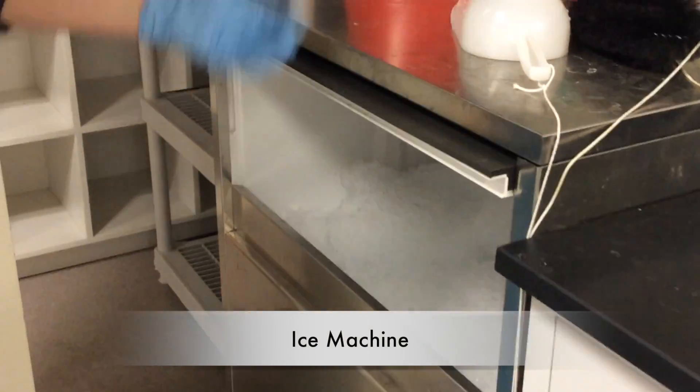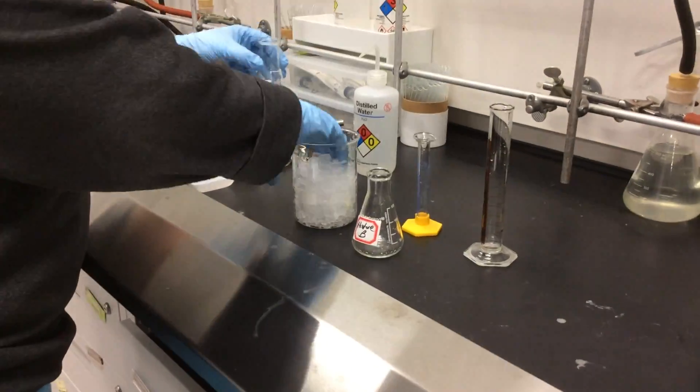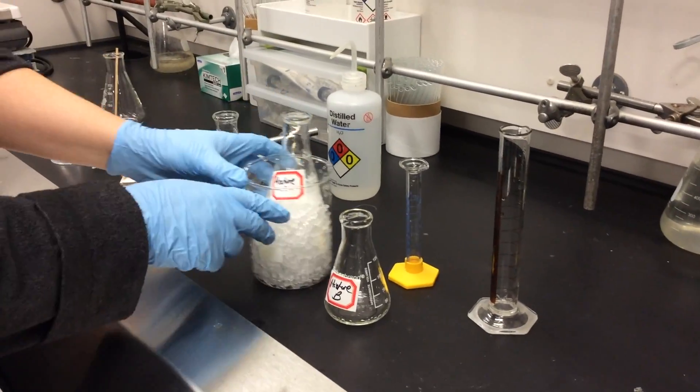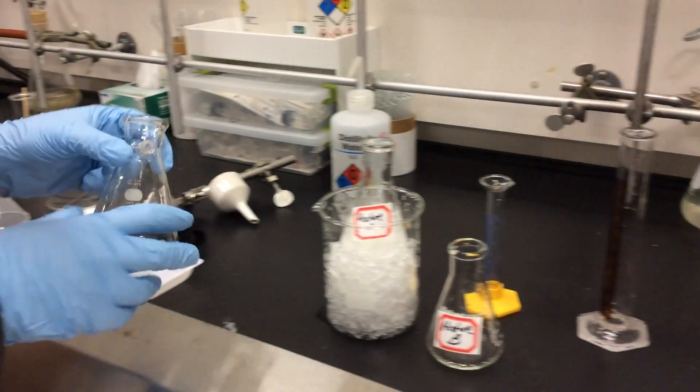Now we've come over to our ice machine. We take our empty beaker, fill it with ice, put our crystals in our ice to ensure maximum yield. Once we've done this, we have to set up a vacuum filtration, which we will use to isolate the crystals.